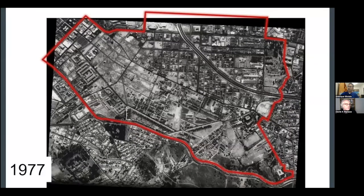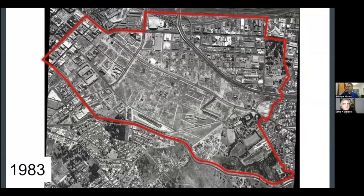By the late 1970s, the destruction and demolition of District 6 was in full effect. You can see that many of the buildings in the western section are all gone — this is all rubble by this point, there's nothing there. And in 1983, the full force of the destruction can be observed. District 6 was demolished, and by this time more than 60,000 people were forcibly removed.